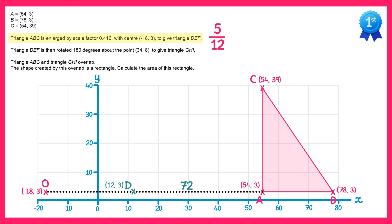Now let's look at point B. The horizontal distance from O to B is negative 18 up to 78, which is a distance of 96. If we do 5 twelfths of this we get 40. So the location of this point will be 40 to the right of O. O is at negative 18, so adding 40 gives 22. So the next point will be at (22,3). Let's call that point E.